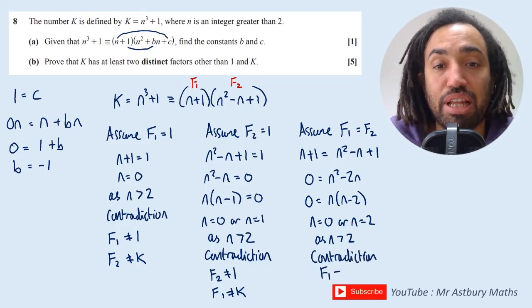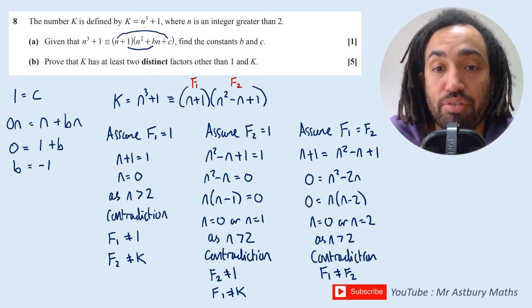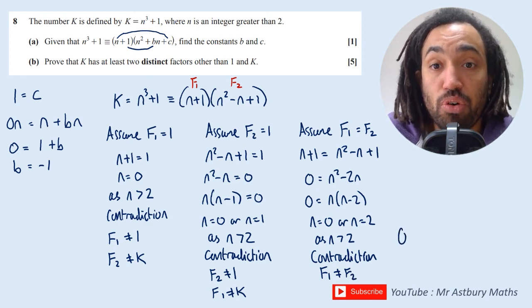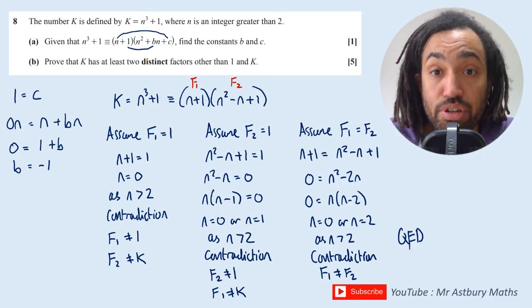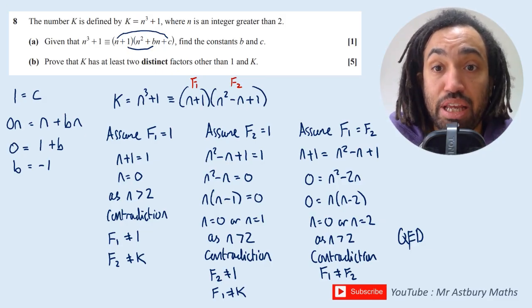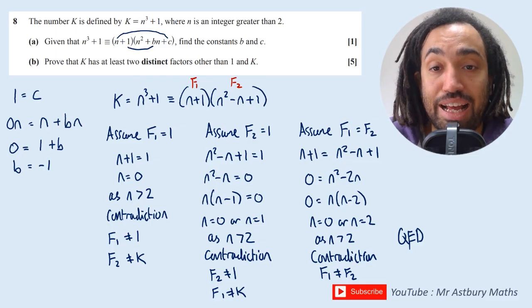And that tells me that F₁ does not equal F₂, and therefore we have proved, QED, that they must be different and they must be factors other than 1 and k.